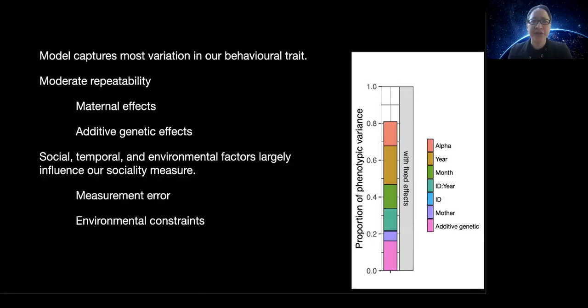I would like to point out that our final model captures the majority of variance in our behavioral trait of interest. While individual repeatability captures about a third of the variance, it's important not to overlook that most of the variation likely comes from temporally changing social and environmental factors. While some of the variation may be measurement error, much of it is also likely to reflect environmental constraints on our sociality measure.